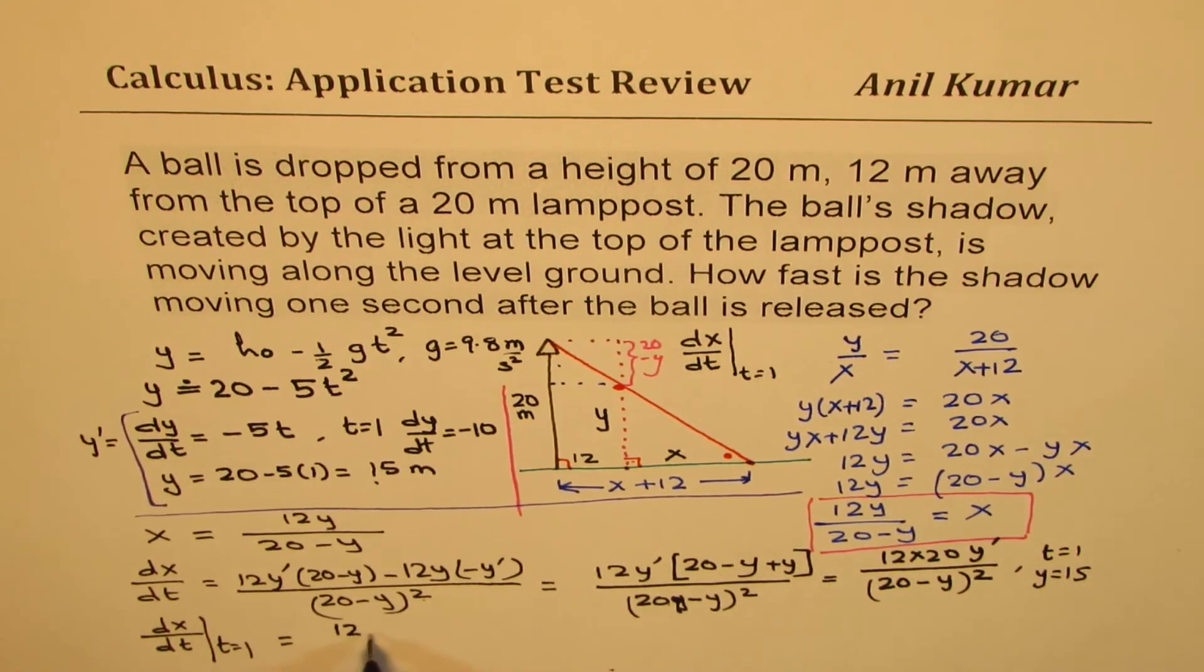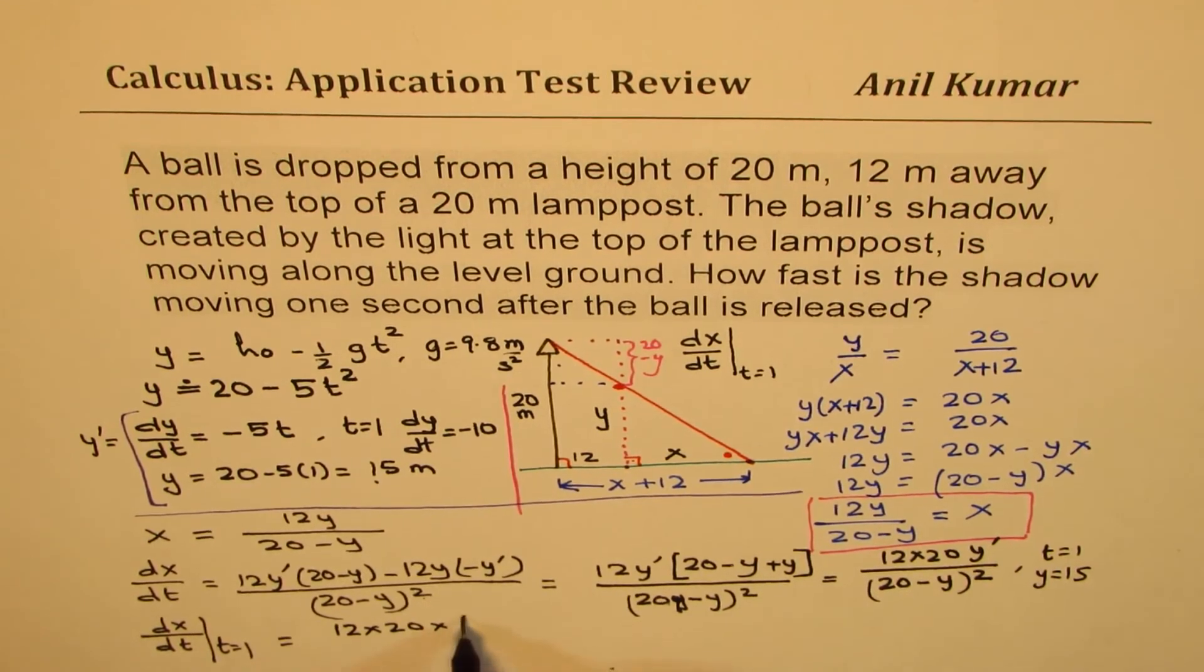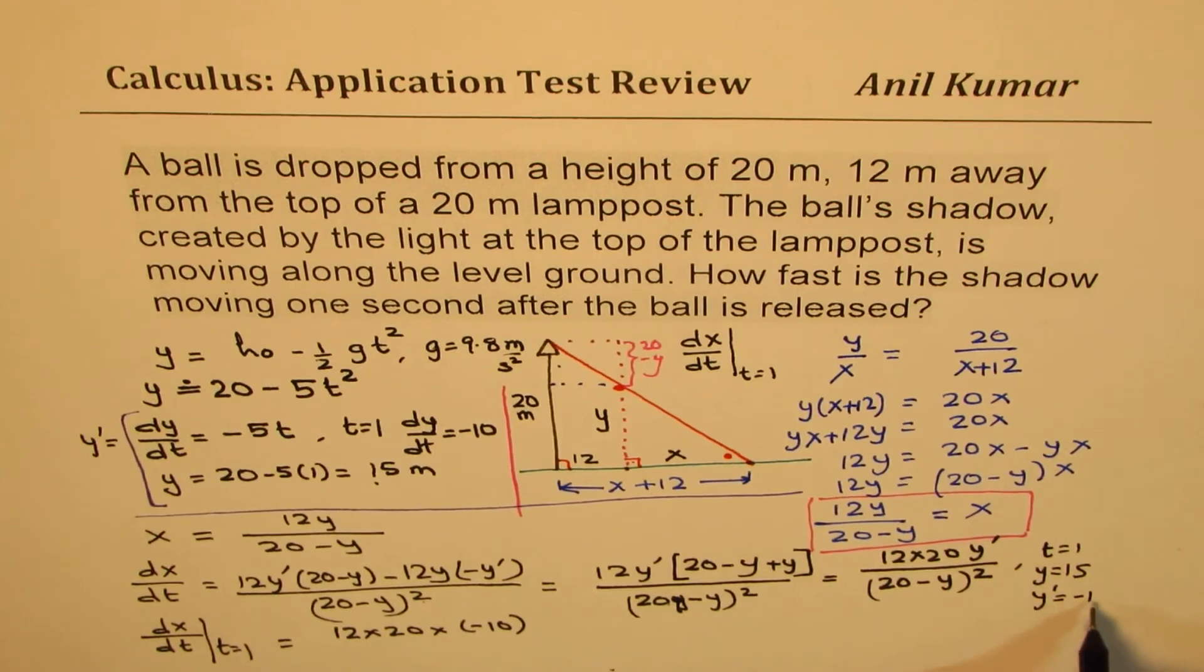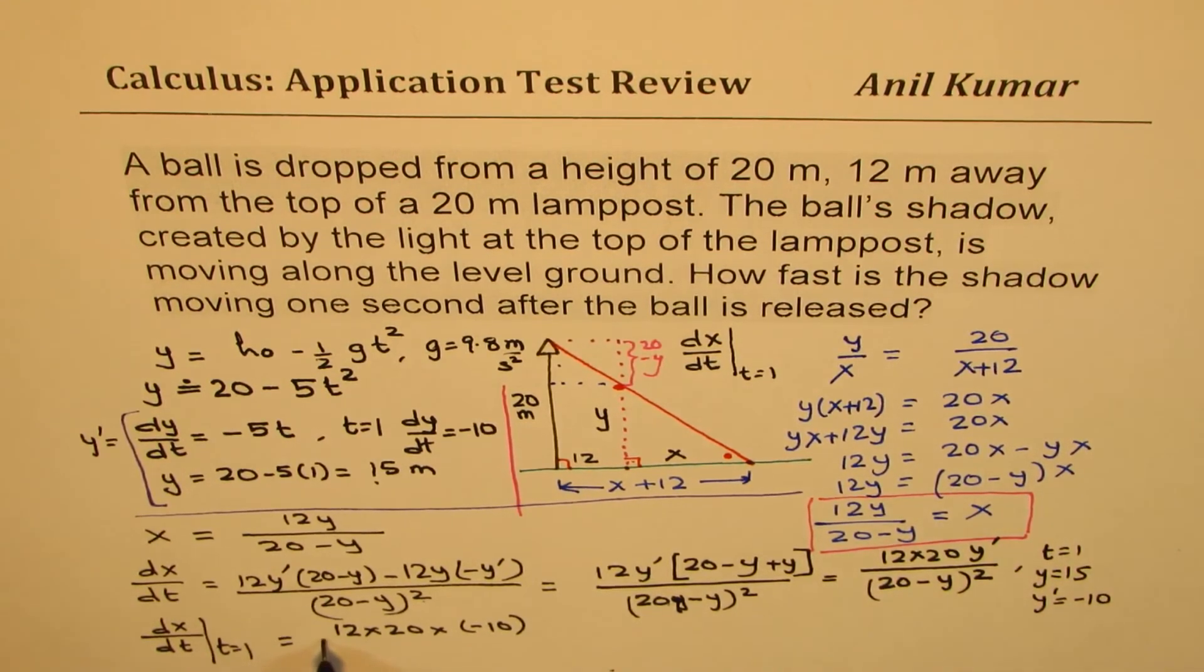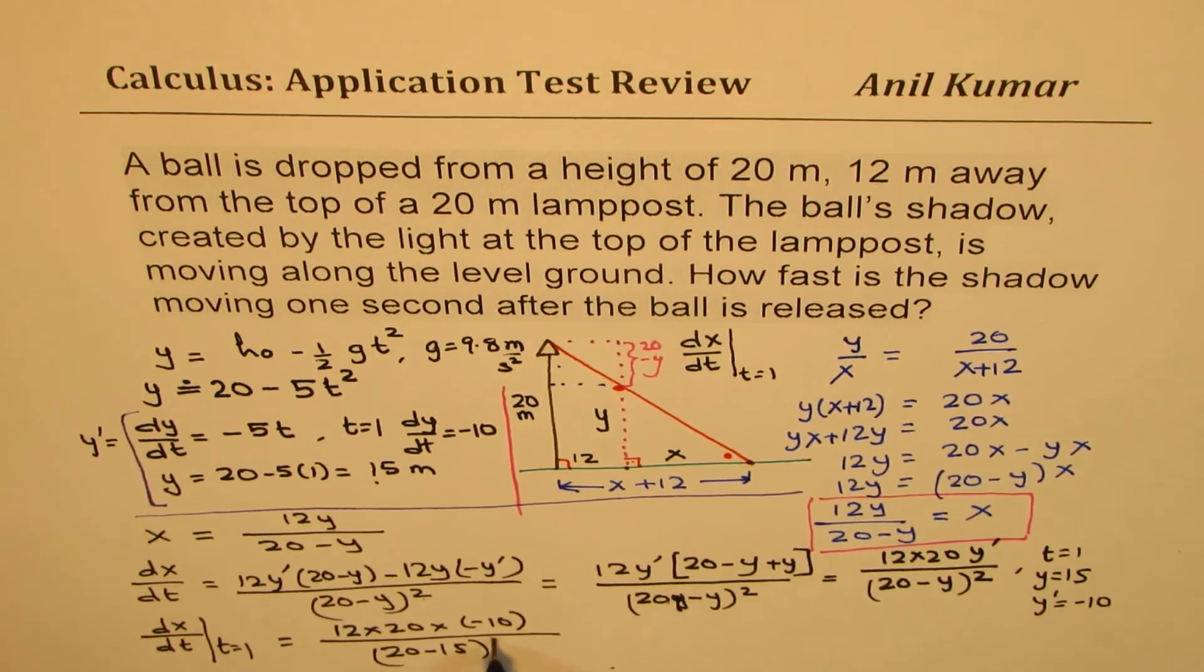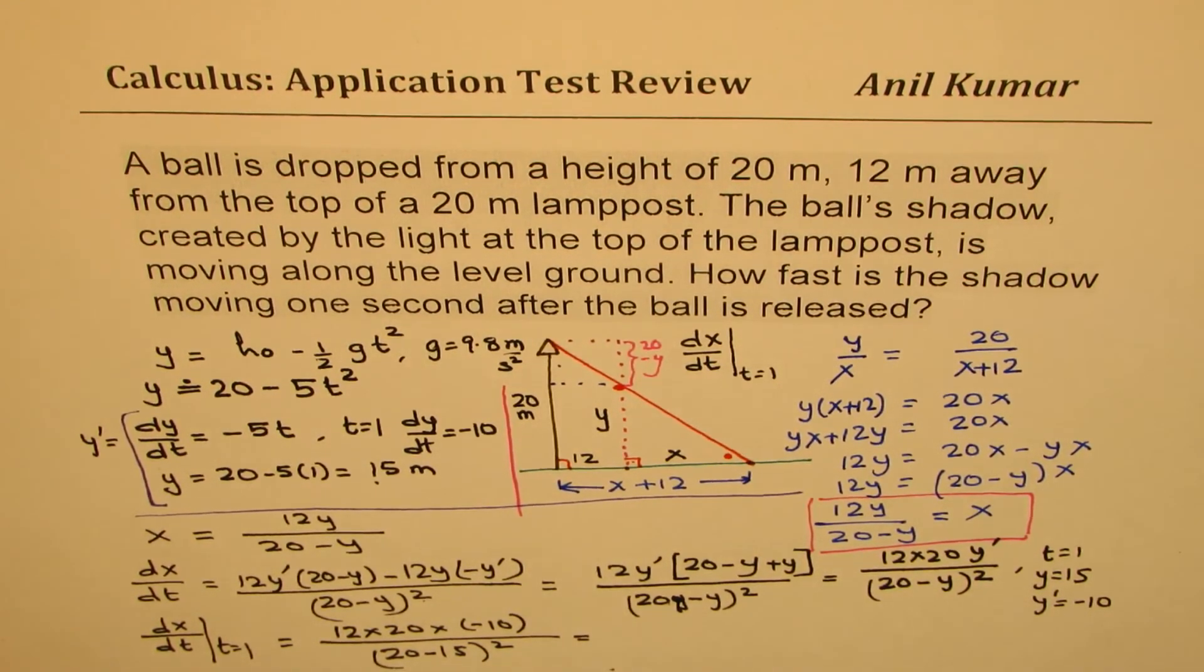Which is 12 times 20 times minus 10, and y prime is minus 10, divided by (20 minus 15) whole squared. Perfect.